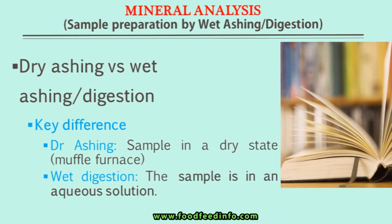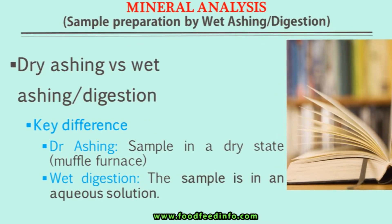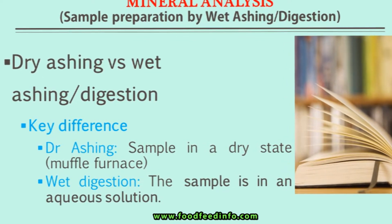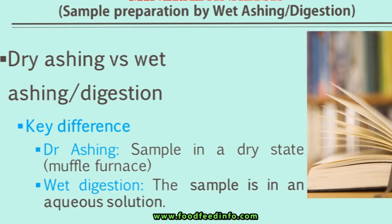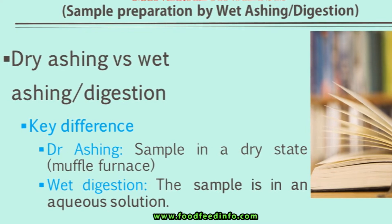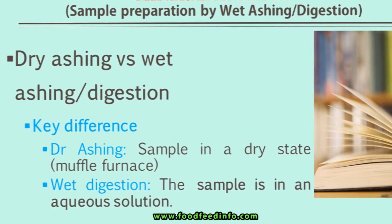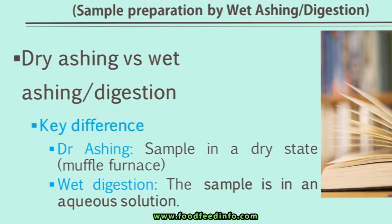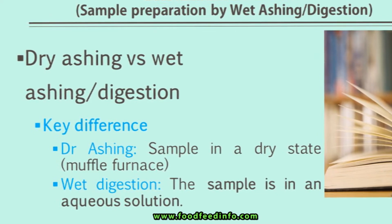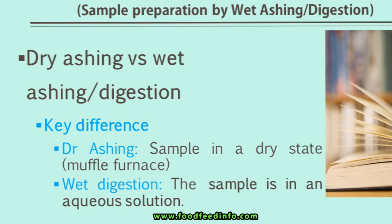What is the difference between wet ashing and dry ashing? Why are we not using the sample which we have burned through a muffle furnace or dry ashing technique? Dry ashing is usually done by burning the sample at 550 or 600 degrees Celsius in a muffle furnace. That also produces ash, but there are chances that some of the minerals might get lost. In wet digestion or wet ashing, where we use different acids, the loss of analyte is very rare — the chances of loss are very minimum. That is why we use the wet ashing technique.